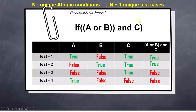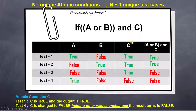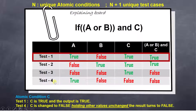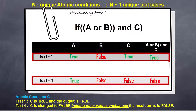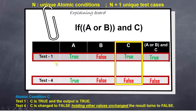Now let's understand condition C. For condition C, we look at test cases 1 and 4. C is true in test case 1 and the output is true. C is false in test case 4 and the output is false. The other inputs — A is true in both, B is false in both — are unchanged. A change in condition C alone has resulted in a change in the decision. This is how Modified Condition Decision Coverage works.